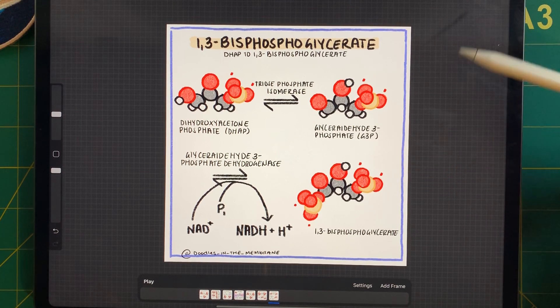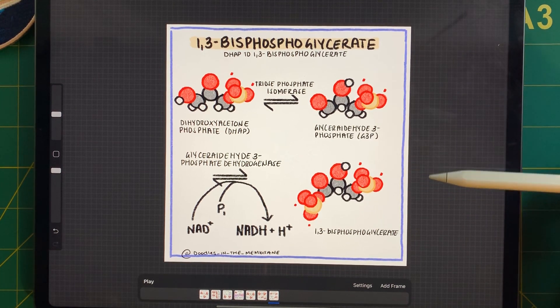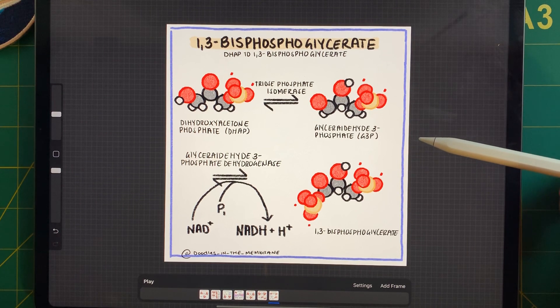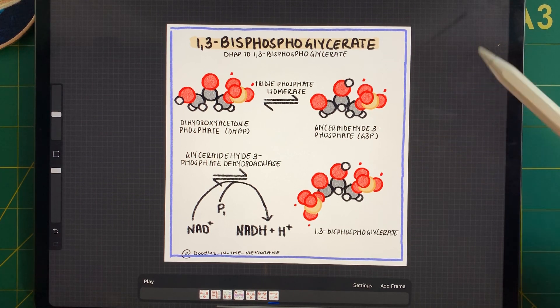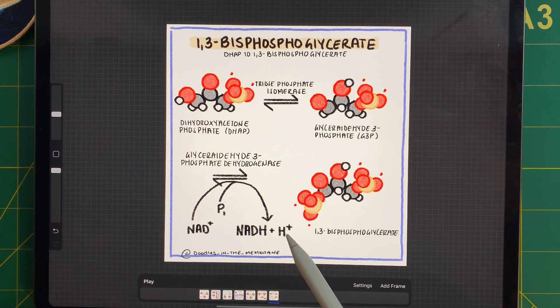Okay, now the next reaction is the glyceraldehyde 3-phosphate, G3P, is going to react with a glyceraldehyde 3-phosphate dehydrogenase. Now, we're going to have an oxidizing agent in this case, which is going to be NAD+, and we're working with an inorganic phosphate. And so with these two reactions, we're going to be forming 1,3-bisphosphoglycerate.